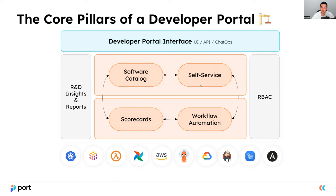Then we have the self-service layer. We want to give developers more independence. Nowadays, developers often require certain resources from their DevOps — a new cloud resource, some permissions, a temporary development environment. Usually that revolves around finding their DevOps, sending a ticket, or sending a Slack message. We want to save that process and give developers the option to consume those pre-made scripts and actions through a self-service layer that contains all the necessary role-based access control and guardrails to make sure that developers gain more independence but still have a safe way to consume those self-service actions.